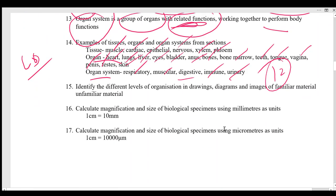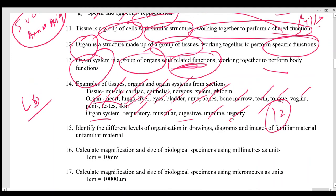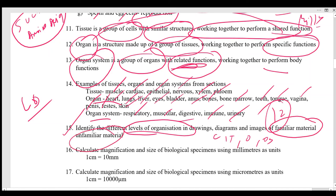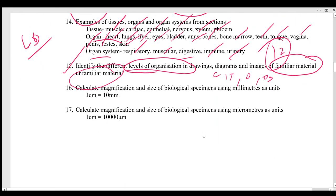You must be able to identify the different levels of organization — whether it is cellular, tissue, organ, or organ system level — in both familiar and unfamiliar material. The last topic is magnification. Magnification is basically how many times you have enlarged a specific picture. They may ask you to calculate the magnification, the image size, or the actual size.